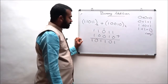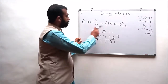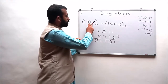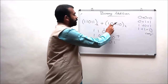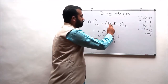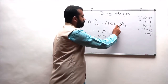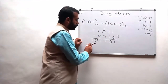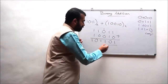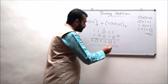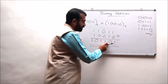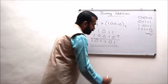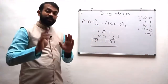In the next step, 1 plus 0 will result in 1, and 1 plus 1 will result in 0 with a carry of 1. Since there are no other numbers, this carry 1 is placed in the MSB position. So the result of 1 1 0 1 1 to the base 2 plus 1 0 0 1 0 to the base 2 is 1 0 1 1 0 1 to the base 2.